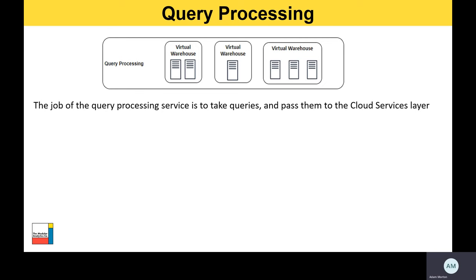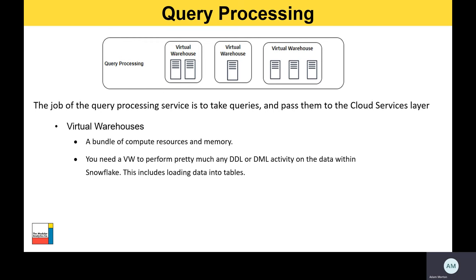When you've written some code you need to execute or you're ready to load data, you'll need to associate the query with a virtual warehouse to execute it. The size of the virtual warehouse directly correlates to the number of credits required to run it. After the first minute, which you're always billed for, credits are calculated on a per-second basis while the warehouse is running. It is recommended you start with the smallest virtual warehouse size first and experiment with different workloads until you find the best balance between performance and cost.